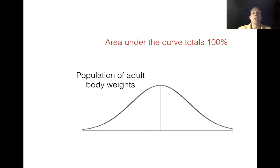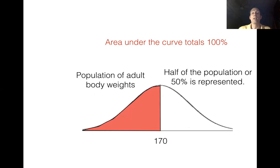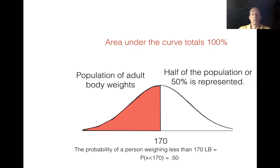Here's how it works. Let's take an example: the population of body weights of adults in America, where the average American adult weighs 170 pounds. If we shade all the area to the left of 170, we've shaded in about half our population. So the chance that the next person who walks through the door weighs less than 170 pounds is about 50%.